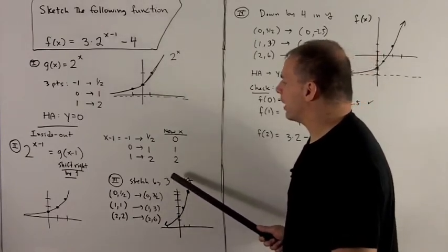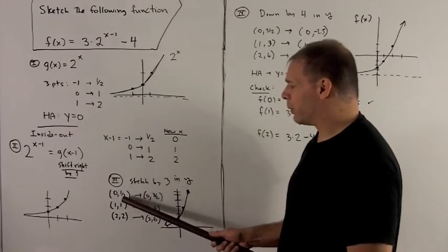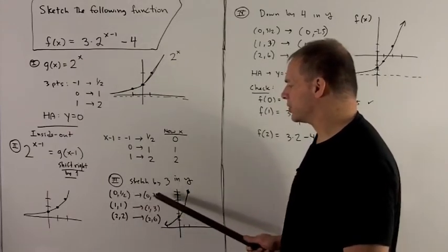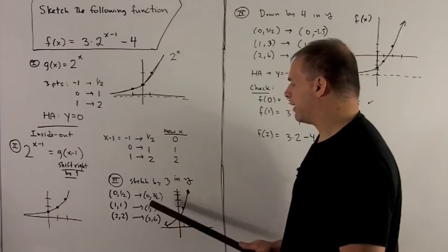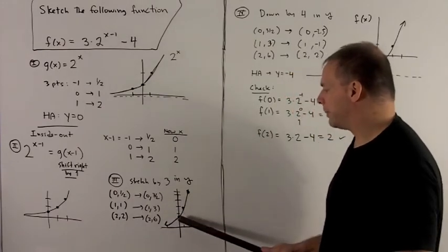So if I'm going to multiply everything by 3, well, we could take our old points. That's just going to multiply the y values by 3. And so I get this new set of points here: 3/2, 1, 3, and 2, 6. We plot them again.